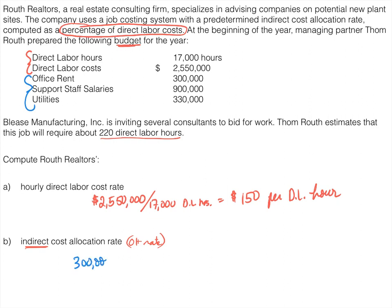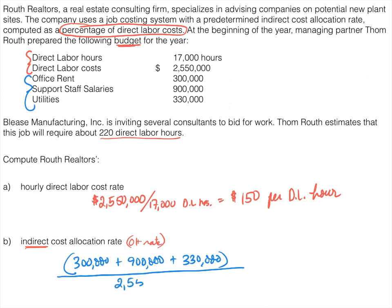So we have $300,000 plus $900,000 plus $330,000 in overhead. To get the rate, we're going to make this a percentage of direct labor cost, so we divide all of our overhead costs by our direct labor costs of $2,550,000. That gives us a percentage of 0.60, or 60%, as our overhead rate.